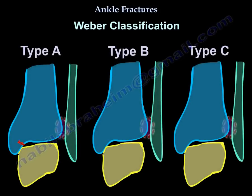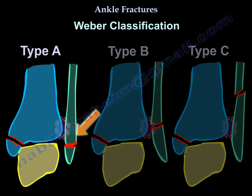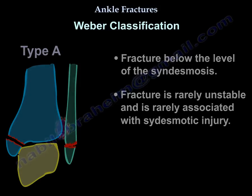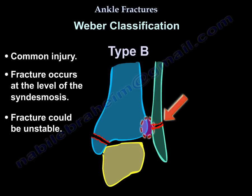Weber A is the fracture below the syndesmosis. That fracture is relatively stable but could have syndesmotic injury. Weber B is the most common — the fracture occurs at the level of the syndesmosis, and the fracture could be unstable.